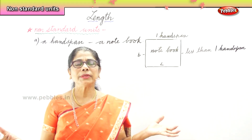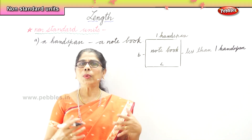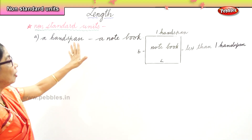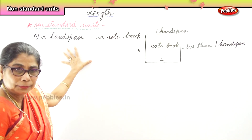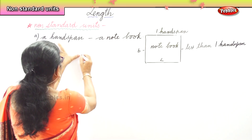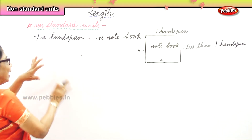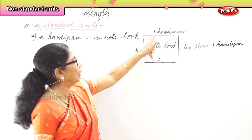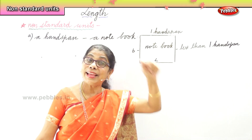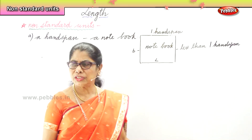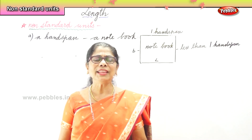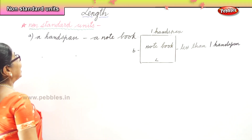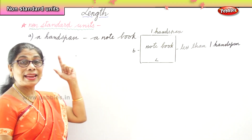Now the breadth of the notebook is less than one hand span. So the notebook is almost like a rectangle — one side is long, one side is short. I have traced the notebook for you. So a hand span is from your thumb to your small finger. The length of the notebook is one hand span; the breadth is less than one hand span. You can measure a table, a ribbon, or anything using a hand span.